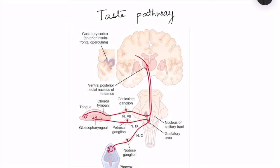The taste pathway, like other pathways, consists of three neurons: first order, second order, and third order. Different nerves carry the information. The seventh cranial nerve, the facial nerve, carries information from the anterior two-thirds of the tongue. The ninth cranial nerve, the glossopharyngeal nerve, supplies the posterior part of the tongue — the circumvallate papillae.